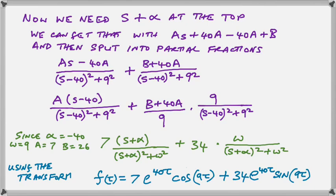We can see that we replace the S plus alpha over that denominator by e to the 40T times cosine 9T, because 40 and 9 are the alpha and the omega. Notice that the 40T is positive instead of minus 40T, and that is because our alpha itself is negative — that counteracts the negative sign and we have a positive T in the expression. This makes it very, very unstable — extremely unstable — because it grows without bounds instead of shrinking. It's highly oscillatory because of the cosine and sine, and what is worse, the oscillation is growing in amplitude.